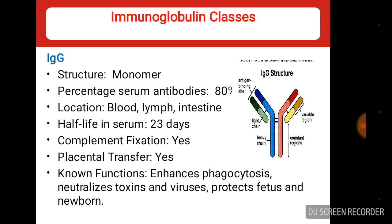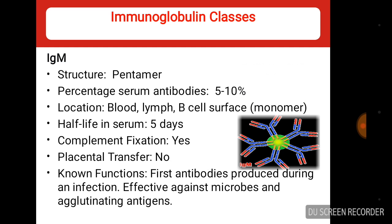Immunoglobulin classes. First is IgG — IgG is a monomer with a monomeric structure and makes up 80% of total immunoglobulin. IgG is the only antibody that crosses the human placenta, protecting the fetus and newborns. Its functions include enhancing phagocytosis and neutralizing toxins.